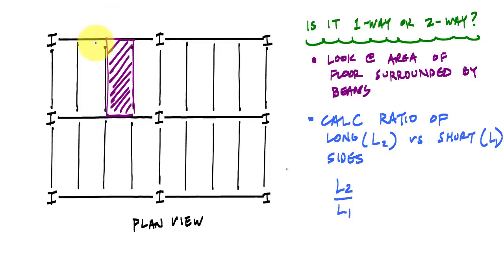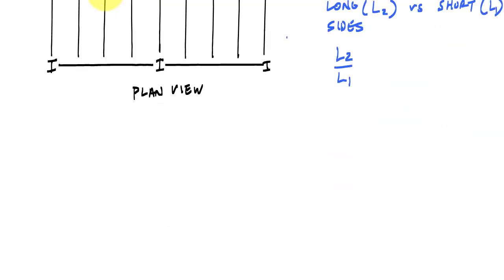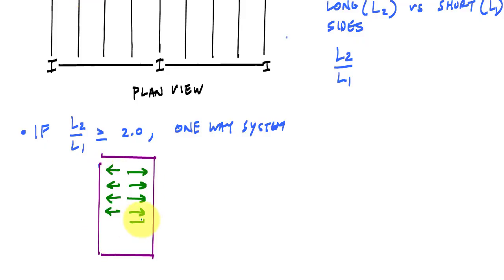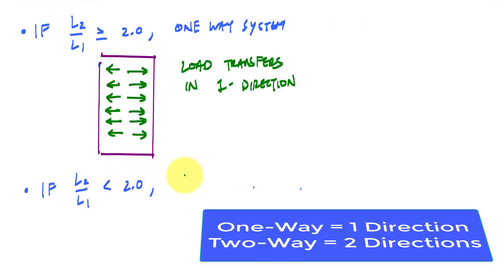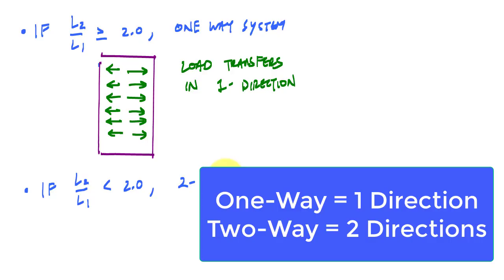So here in this rectangle, this would be L2 and this would be L1. If L2 over L1 is greater than or equal to two, then I have a one-way system, which means that the load travels in one direction, a load in the slab in one direction parallel to the short side. If L2 over L1 is less than this, then I have a two-way system, which means that my load is transferred in two directions.